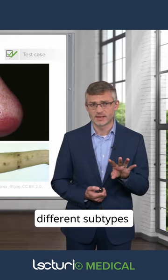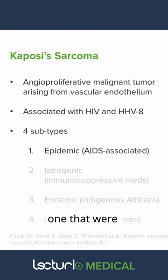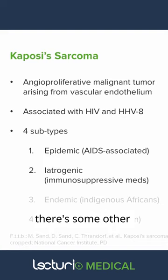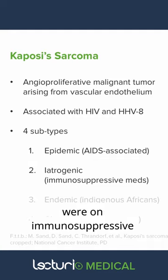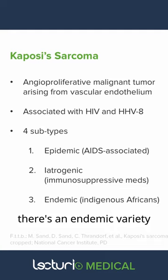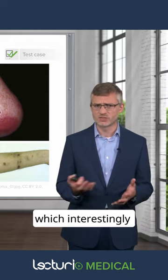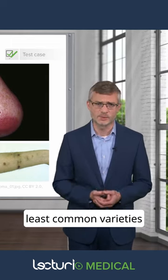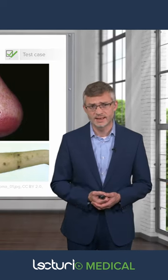There are actually four different subtypes that give rise to this condition. The first is the epidemic subtype, which is the AIDS-associated one we're very familiar with. There's also iatrogenic, which is still seen today in patients on immunosuppressive medications and transplant patients. There's an endemic variety, which is endemic to indigenous Africans. And then a classic version — interestingly, one of the least common varieties — but it was referred to as classic Kaposi's sarcoma before it became associated with the HIV/AIDS epidemic.